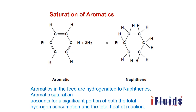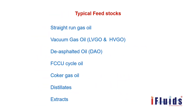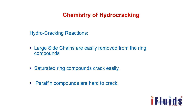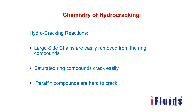Aromatic compounds are converted into saturated naphthenes. Aromatics are carcinogenic compounds and are limited in Euro-6 product specifications. Large side chains are easily removed from ring compounds, and saturated ring compounds crack easily, whereas paraffin compounds are harder to crack.